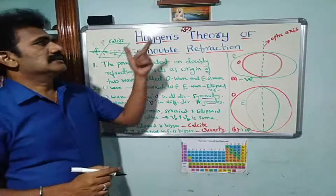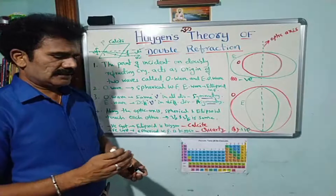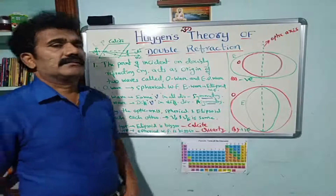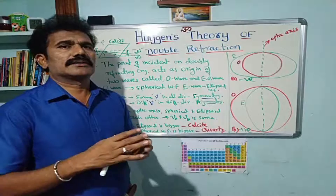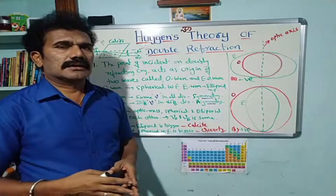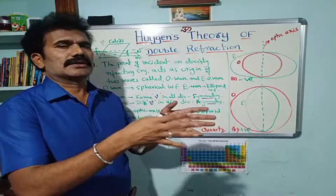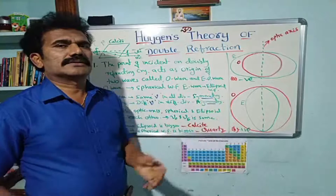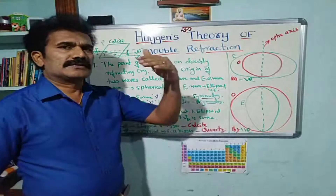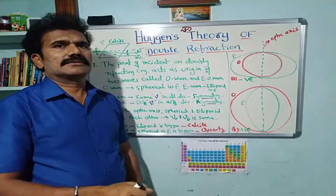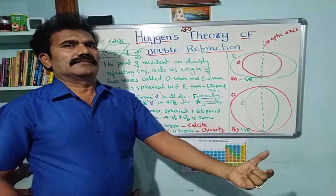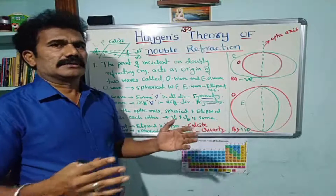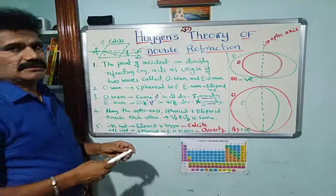How do we explain double refraction according to Huygens' theory? Huygens' theory explains the wave nature of light — when light is emitted by a source it propagates in the form of a wave. For parallel rays you get a plane wave front; for divergent rays you get a spherical wave front; for a line source you get a cylindrical wave front. Similarly, you can get another type of wave front called an ellipsoid in three dimensions.